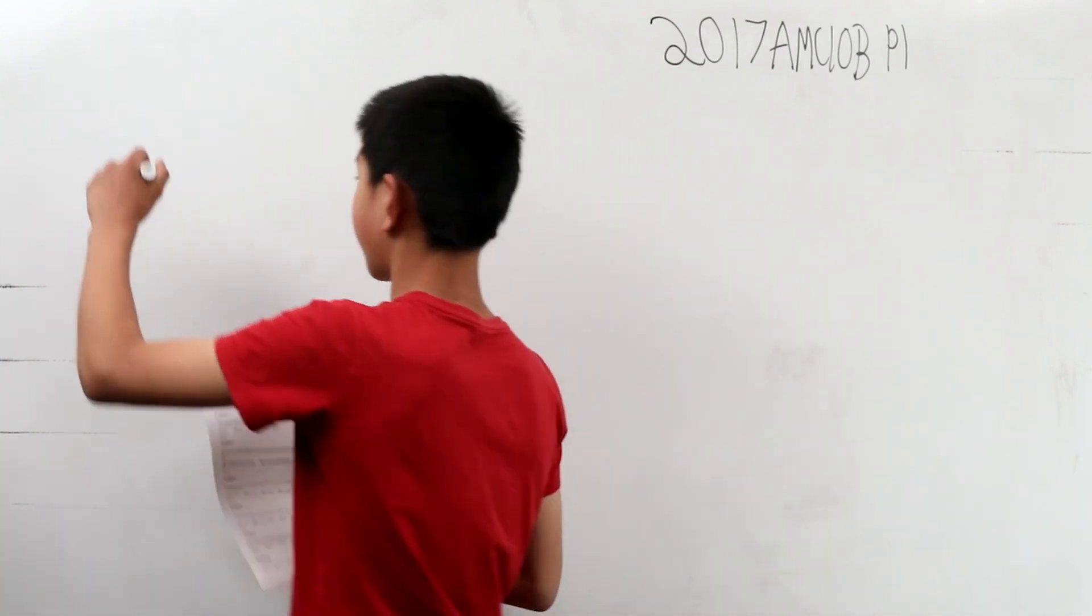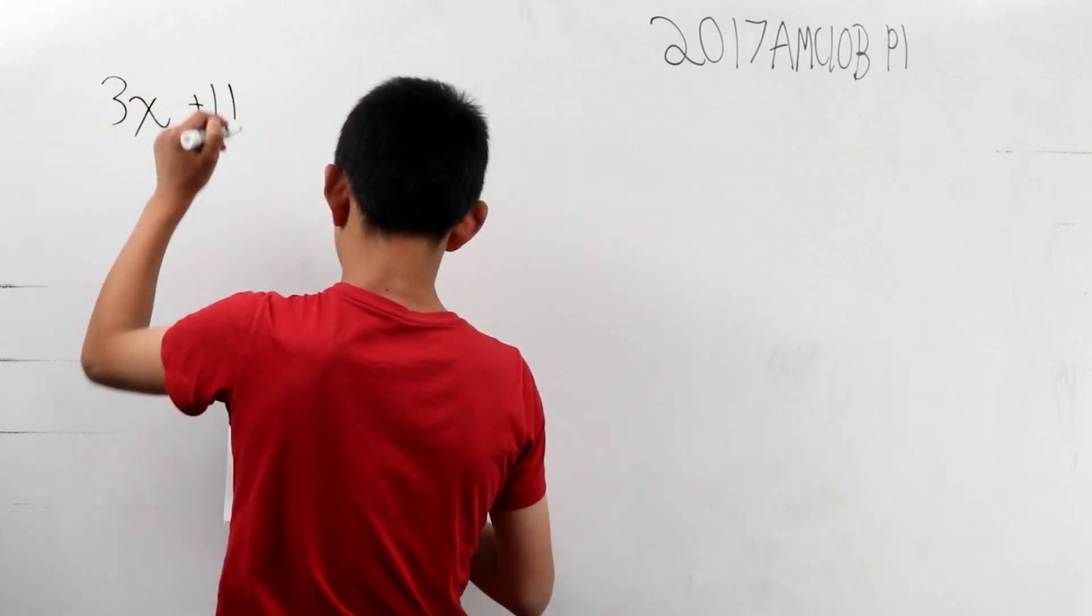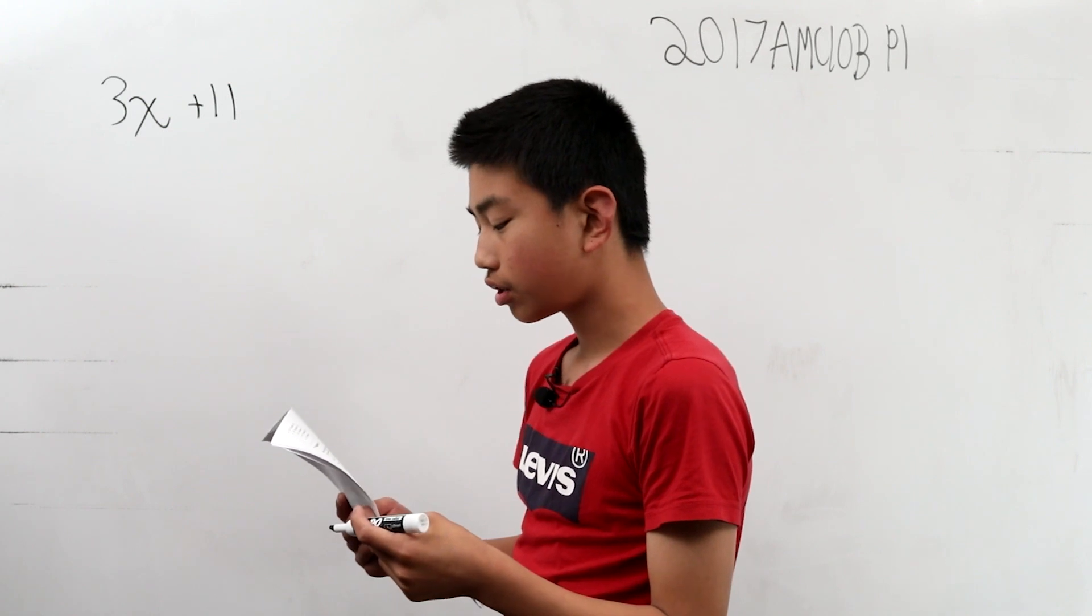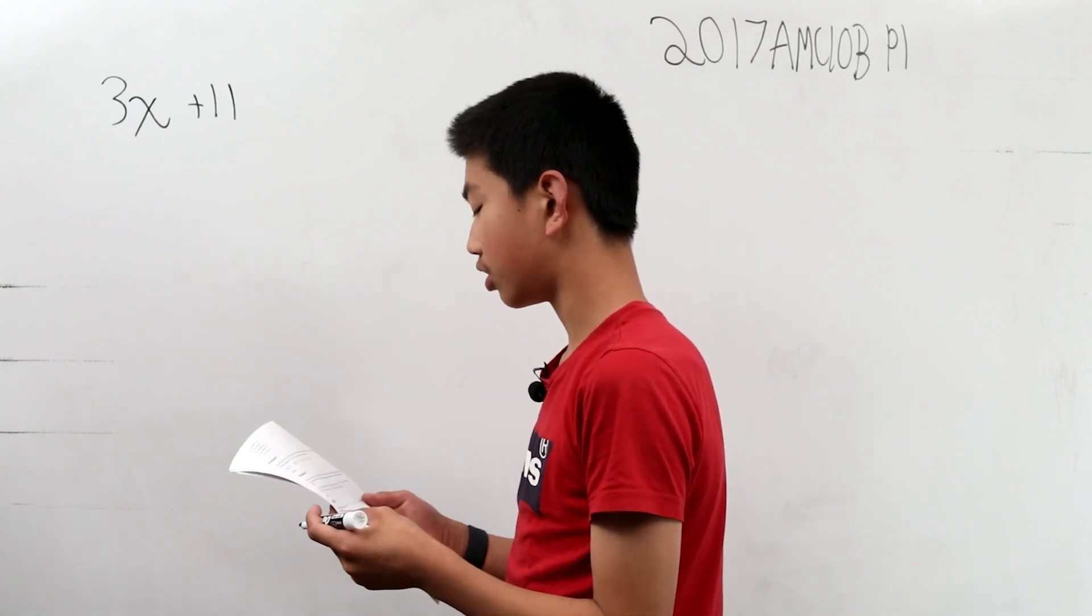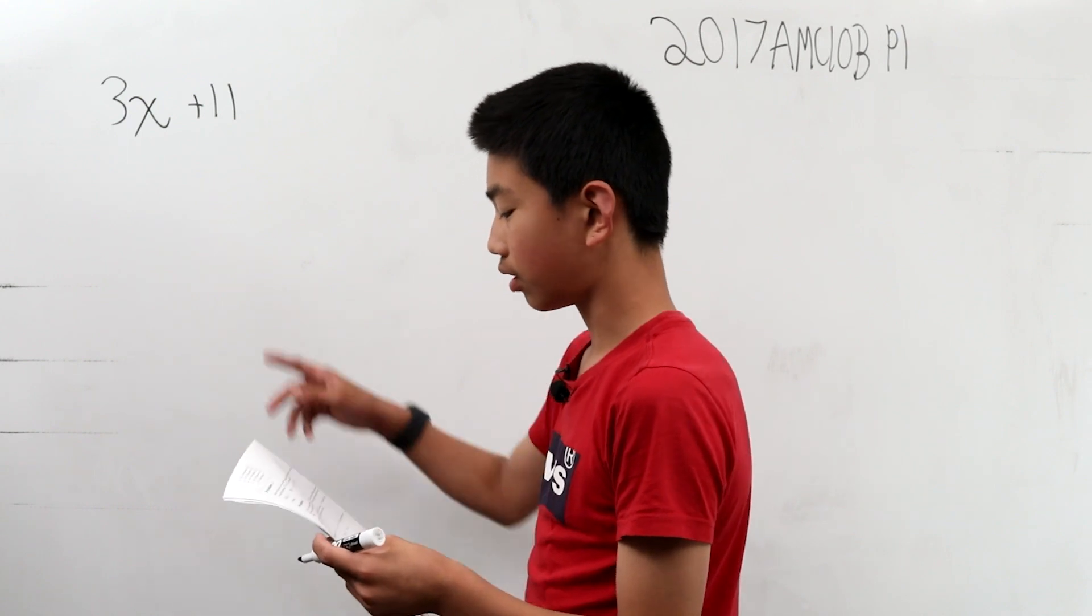So let her number be x, and it's multiplied by three, and you add 11. And then you switch the digits of the result, and you get a number like that.